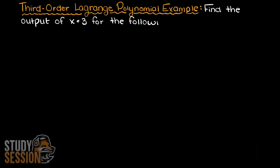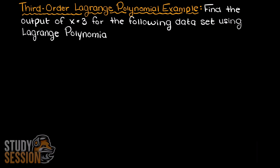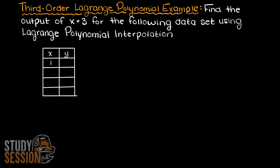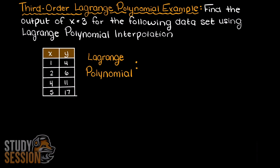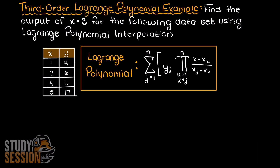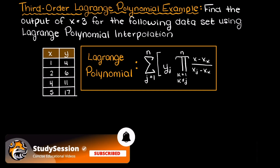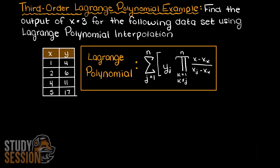In this video, we are going to go through a third order Lagrange polynomial interpolation example so that you can see how we solve one of these problems. We are asked to estimate the output of the following dataset using Lagrange polynomial interpolation for an input of x equals 3. Since we have four data points presented here, we are going to have four terms in our Lagrange polynomial, and therefore a 4 minus 1 degree, giving us a third degree Lagrange polynomial.